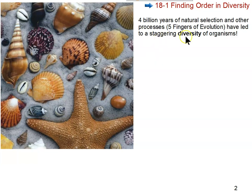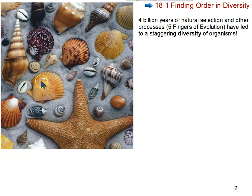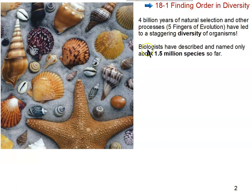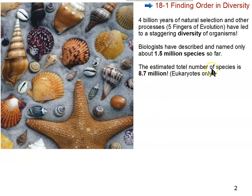This has resulted in a staggering diversity of organisms, represented by this picture of mostly molluscs — and a sea star, which is in the phylum Echinodermata, while molluscs are in phylum Mollusca. Biologists have described about one and a half million species. That seems like a big number, but when you compare it to the estimated number of species on the planet, it's just a drop in the bucket.